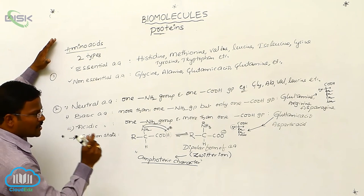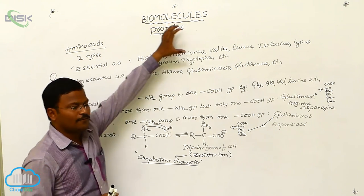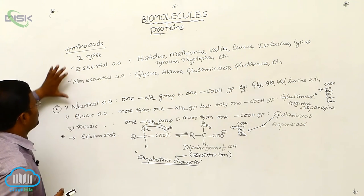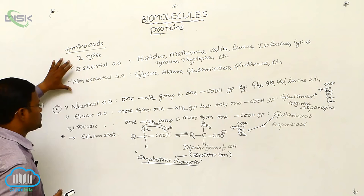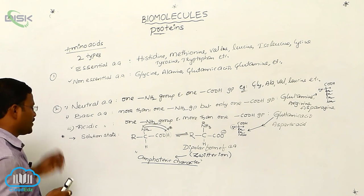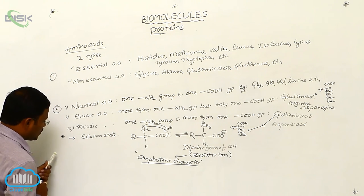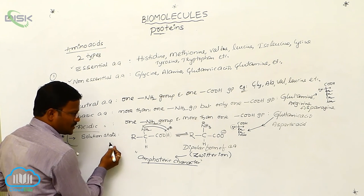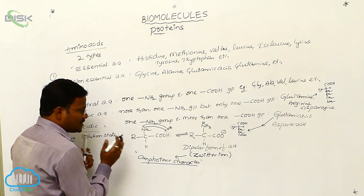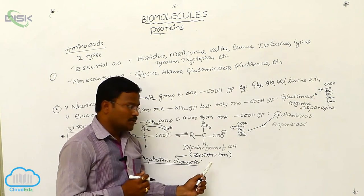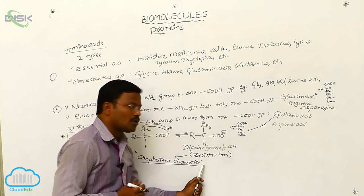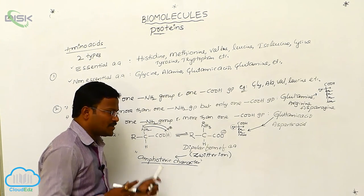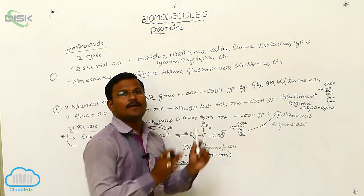In summary, we have covered the general structure of amino acids, the 20 different types of natural amino acids, and their classification into essential and non-essential, as well as neutral, basic, and acidic amino acids. The most important topic is that in solution state, amino acids exist in a dipolar form called zwitter ions, which show amphoteric character — meaning they react with both acids and bases.